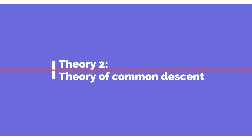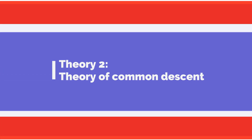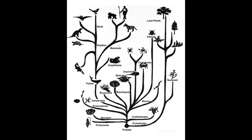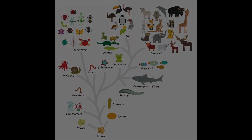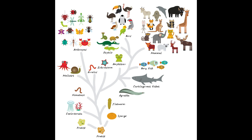Theory of common descent. The second theory is the theory of common descent, which proposes that all living organisms are descended from a common ancestor. This means that we share a common history with all living things on Earth, from bacteria to blue whales.